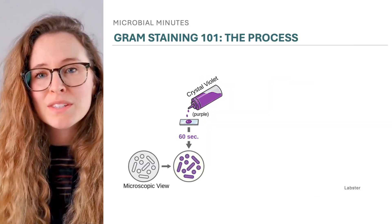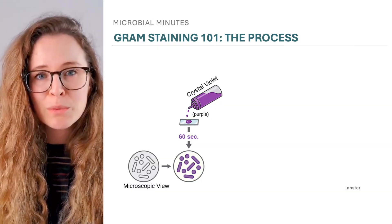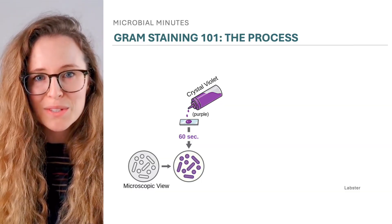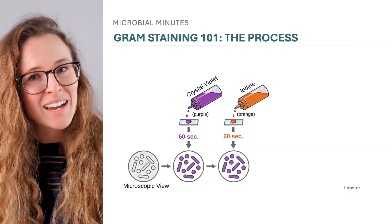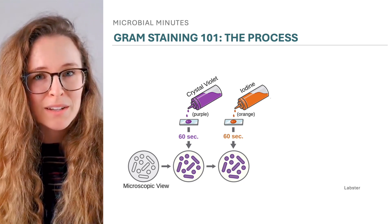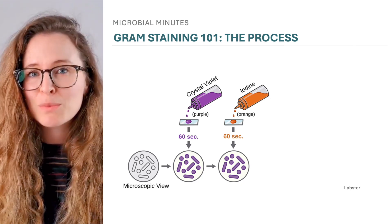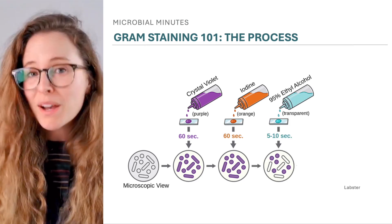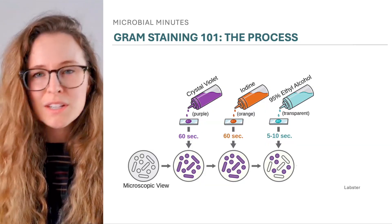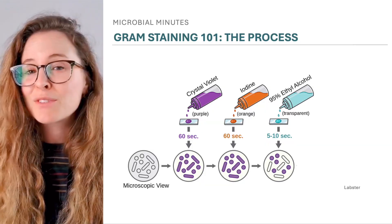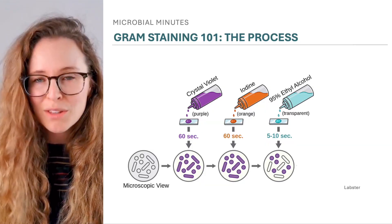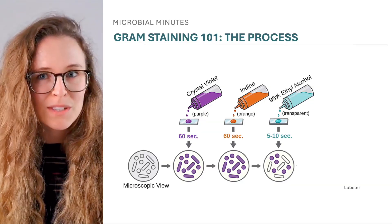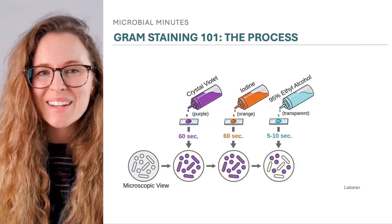The staining process involves treating fixed bacteria with crystal violet dye, which is taken up into the cells. Iodine is added, which binds to crystal violet ions, bulking them up to prevent them from easily leaching out of the cells. Gram-positive bacteria continue to hold onto the purple dye even after being treated with ethanol, which dehydrates and closes the pores in their thick cell wall, trapping the stain inside.